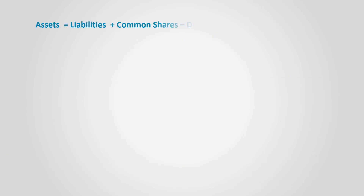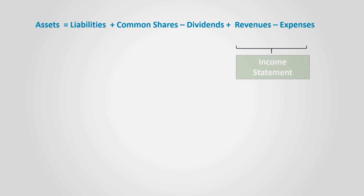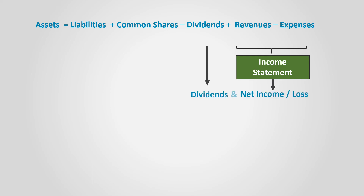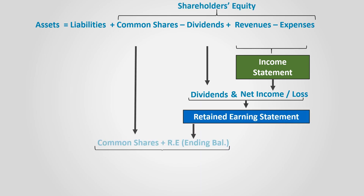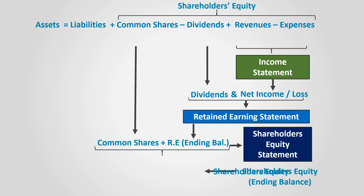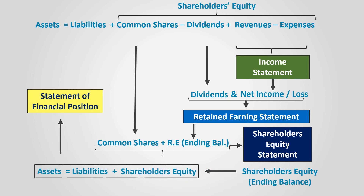Now let's look at the extended accounting equation, which includes dividends, revenues, and expenses. If we subtract expenses from revenues, we get net income. Revenues and expenses are the main components of the income statement. If we subtract dividends from net income, we get retained earnings, which is undistributed net income. If we add common shares to retained earnings, we get total shareholders' equity, which is represented in the shareholders' equity statement. The statement of financial position, or balance sheet, presents assets, liabilities, and shareholders' equity together to show what the business owns and owes to others.